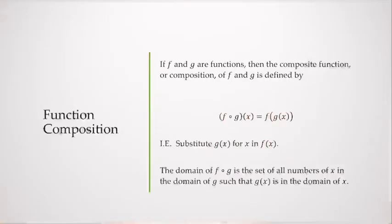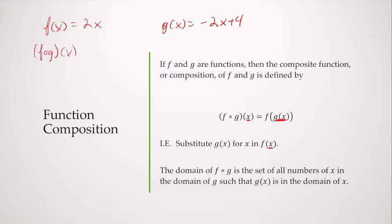I want to do a little refresher of function composition. This is something we did cover in college algebra. But if I have two functions and f and g are functions, then we can compose the functions by substituting in g of x into x in f of x. So let's let f of x equal 2x and g of x equal negative 2x plus 4. If I want to take the function composition of these two functions, I'm going to take f of g of x. So that means I'm substituting g of x into f of x.